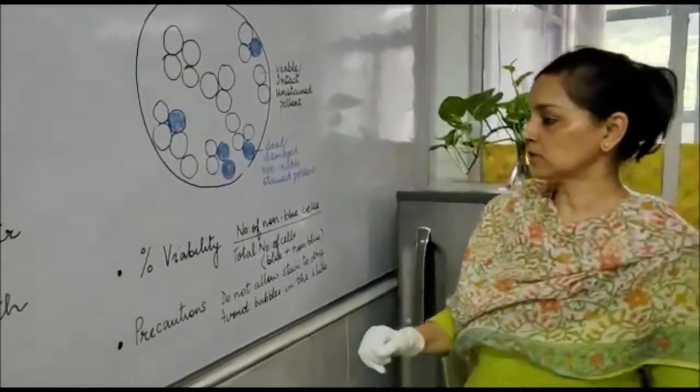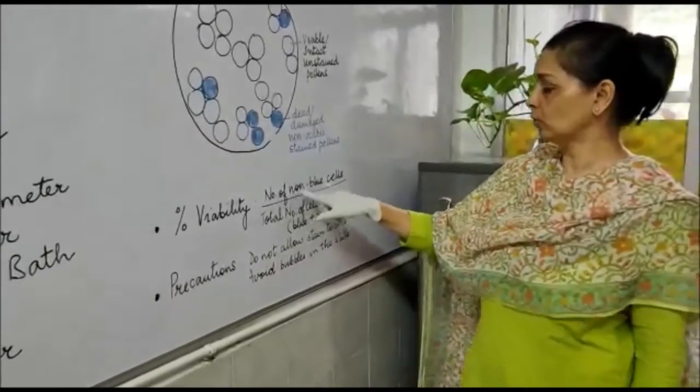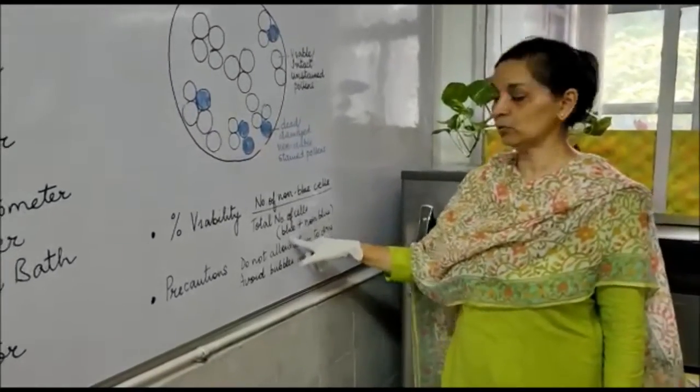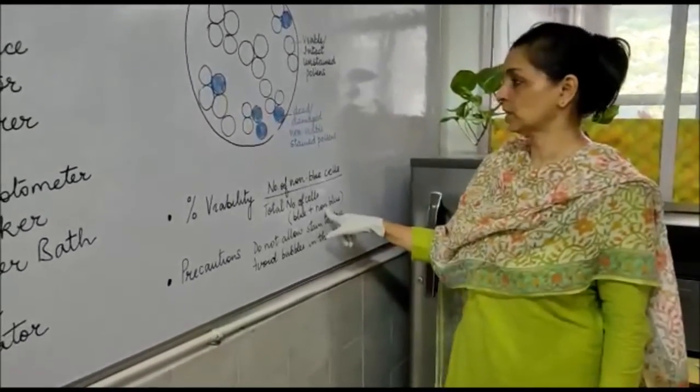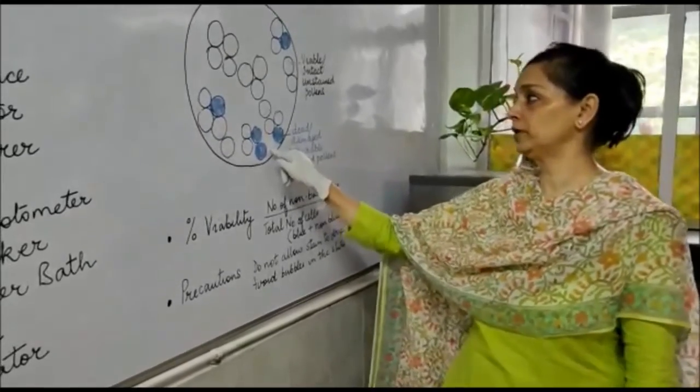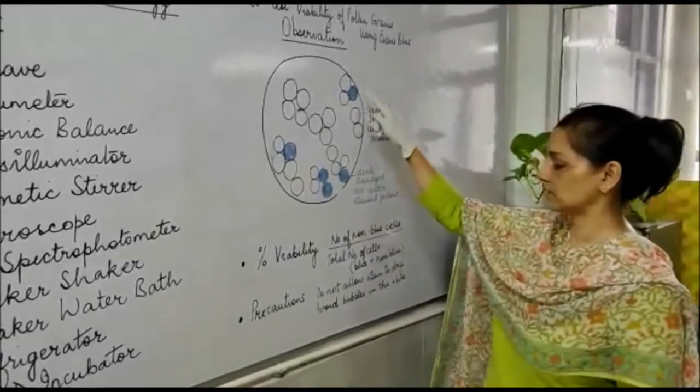How do we calculate percentage viability? Percentage viability equals the number of non-blue cells divided by the total number of cells, that is blue plus non-blue cells. When you examine the slide under the microscope, count all the cells and the number of blue cells.